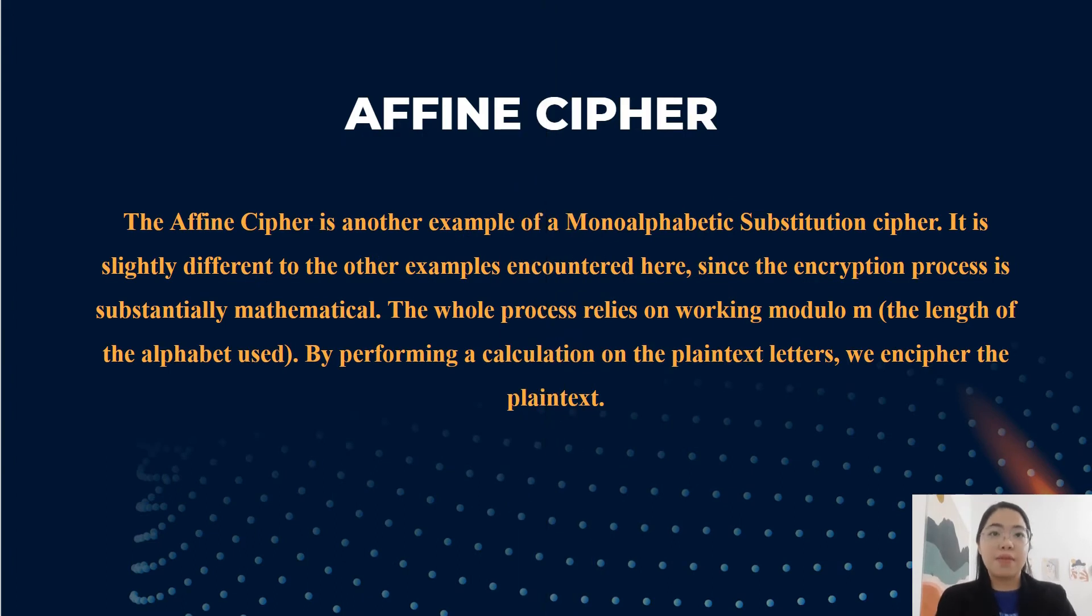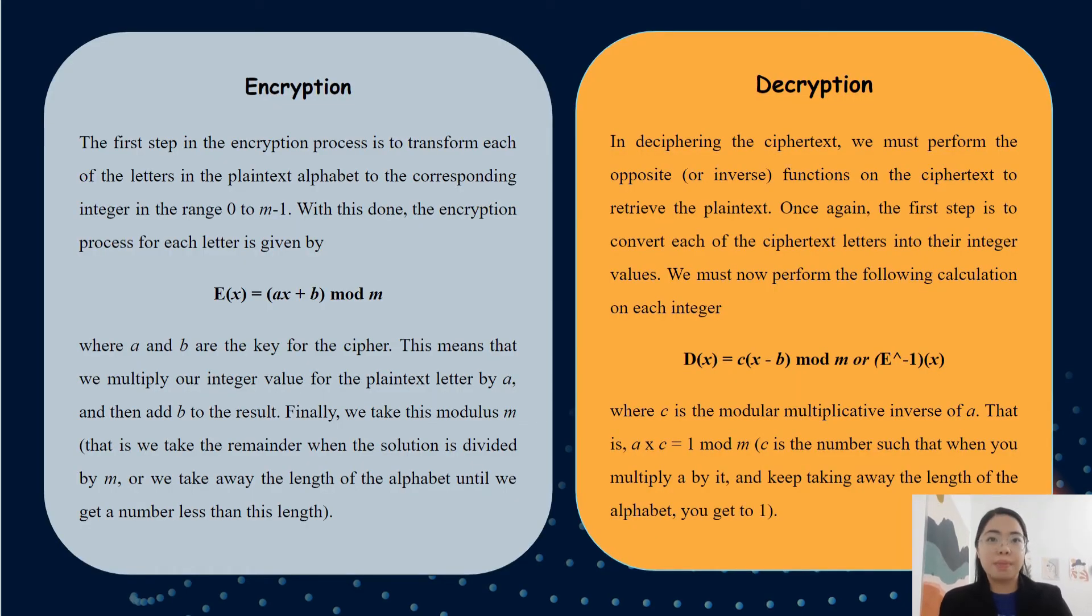Affine cipher. The affine cipher is another example of monoalphabetic substitution cipher. It's slightly different to the other examples encountered here, since the encryption process is substantially mathematical. The whole process relies on working modular M. By performing a calculation on the plaintext letter, we cipher the plaintext. For the encryption, the first step in encryption process is to transform each of the letters in the plaintext alphabet to the corresponding integer in the range 0 to M minus 1. With this done, the encryption process for each letter is given by E(X) equals AX plus B mod M, where A and B are the key for the cipher. This means that we multiply our integral value for the plaintext letter by A and then add B to the result. Finally, we take this modulus M.